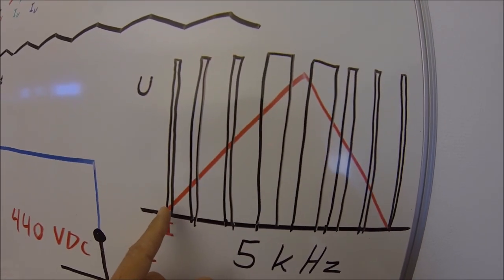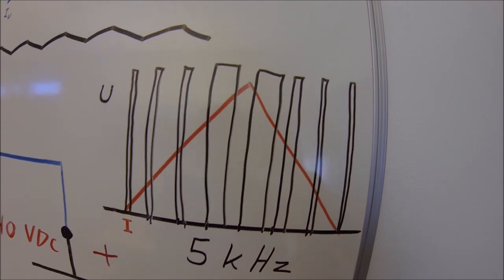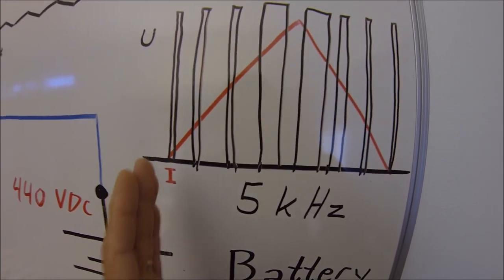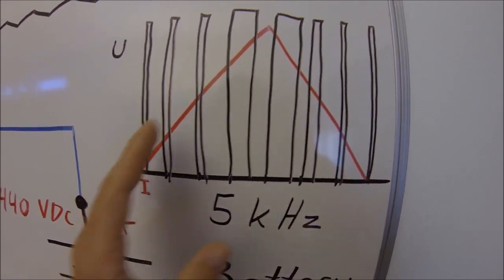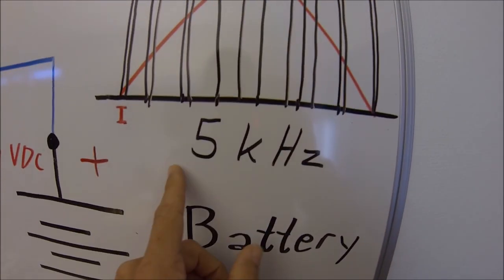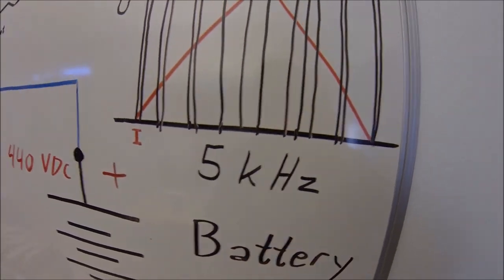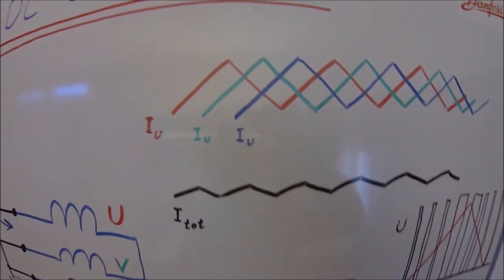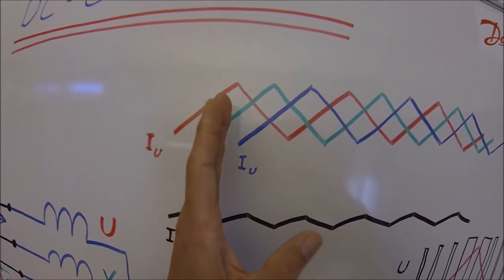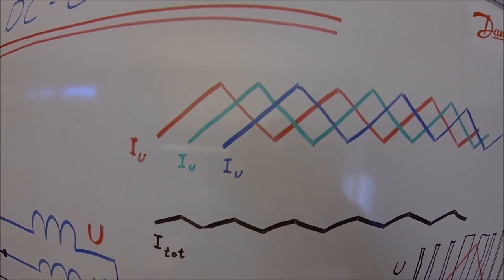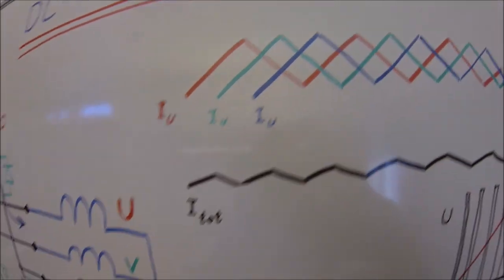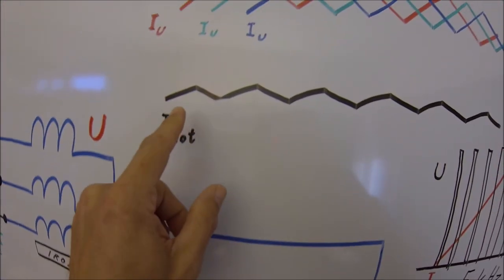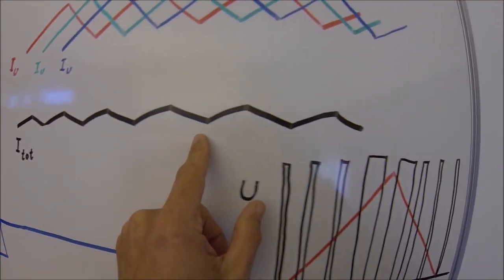The current in each phase has a trapeze-shaped waveform. The pulse width modulation making this trapeze-shaped waveform is about 5 kHz. The three motor phases are separated about 120 degrees and at the summarization point, the current will be the sum of the motor phases.